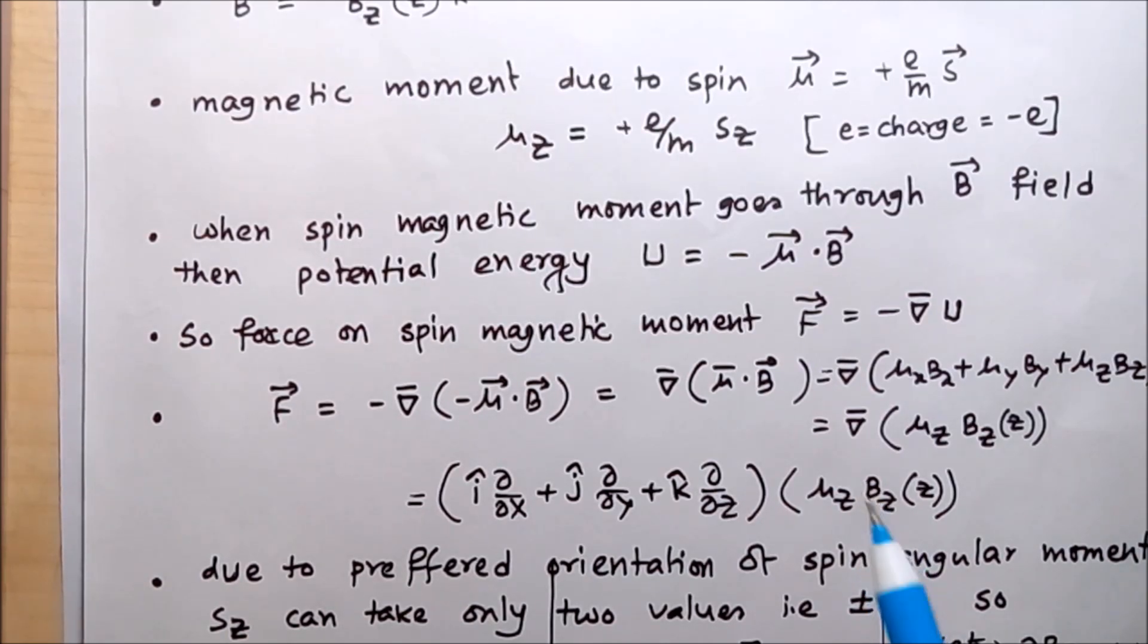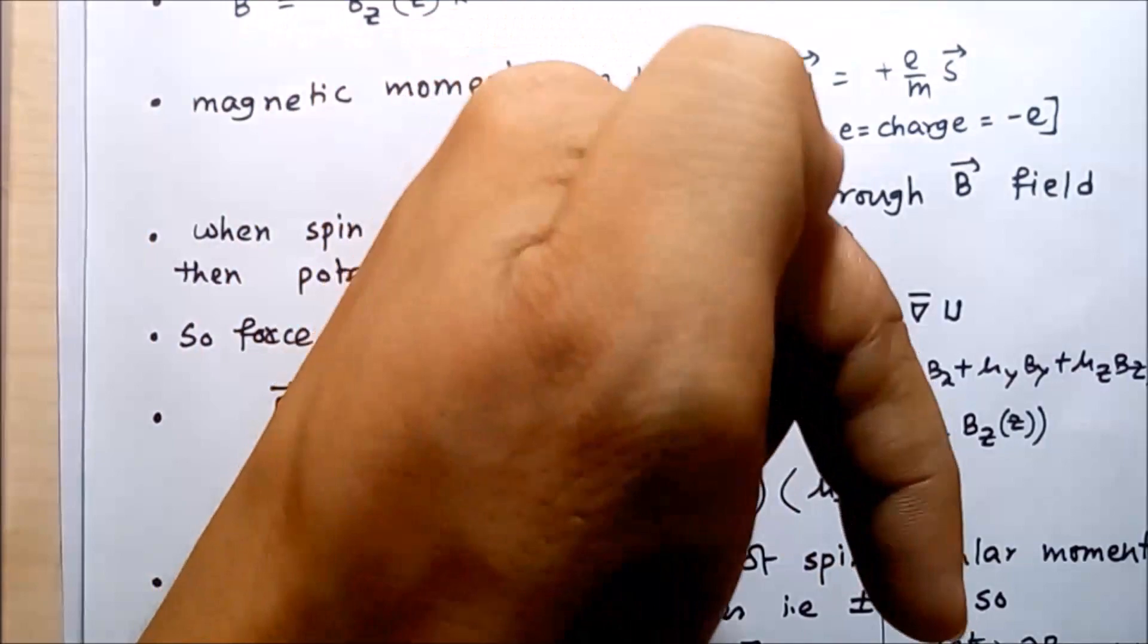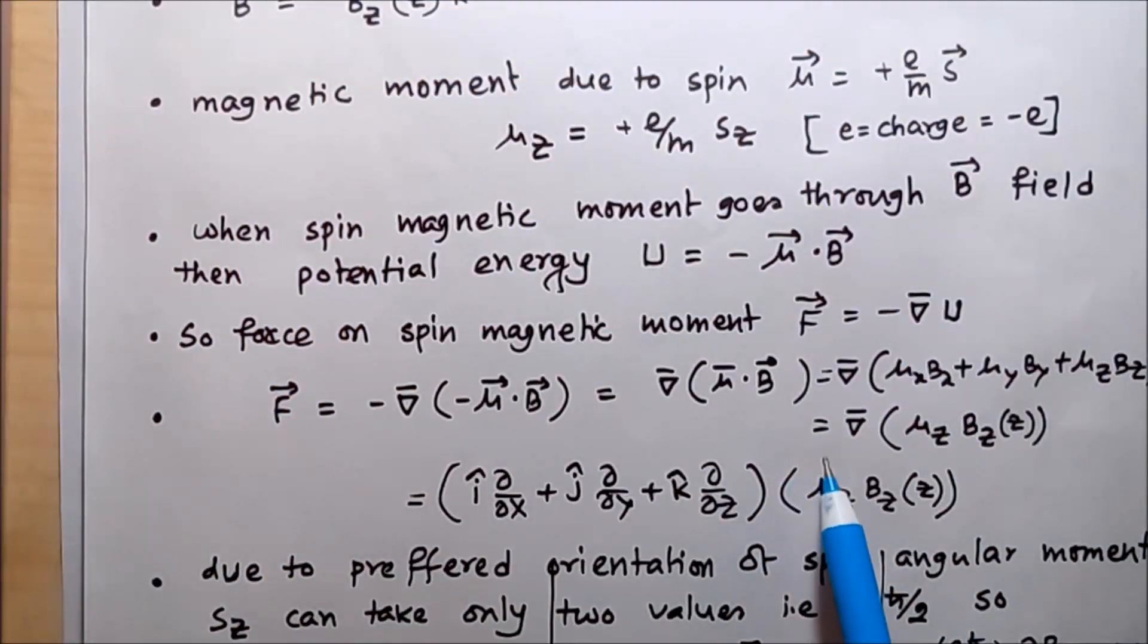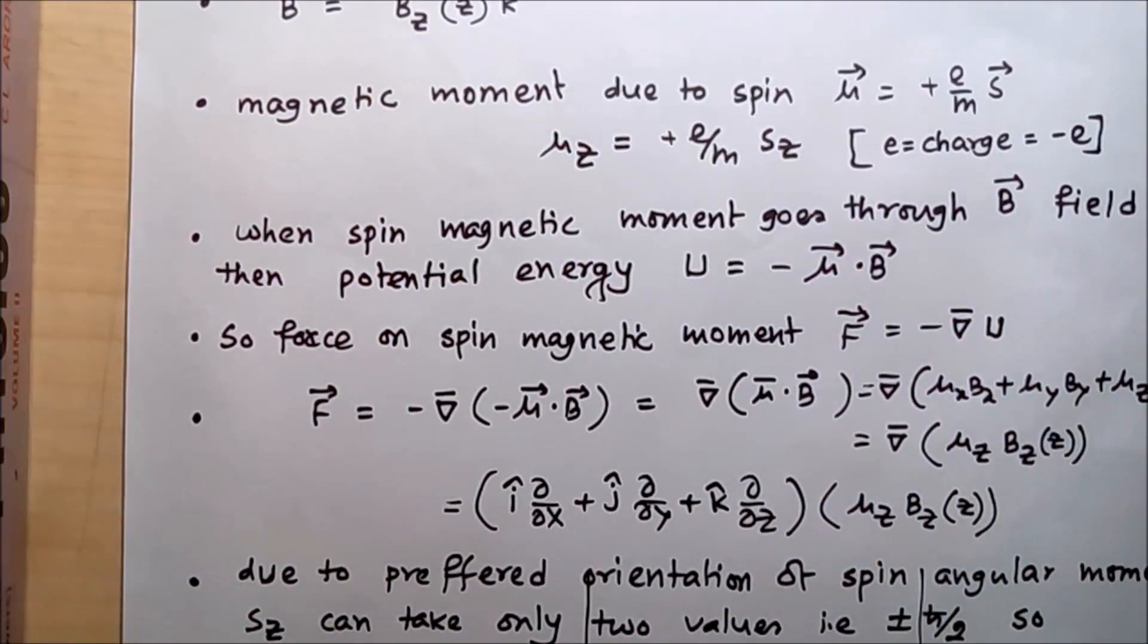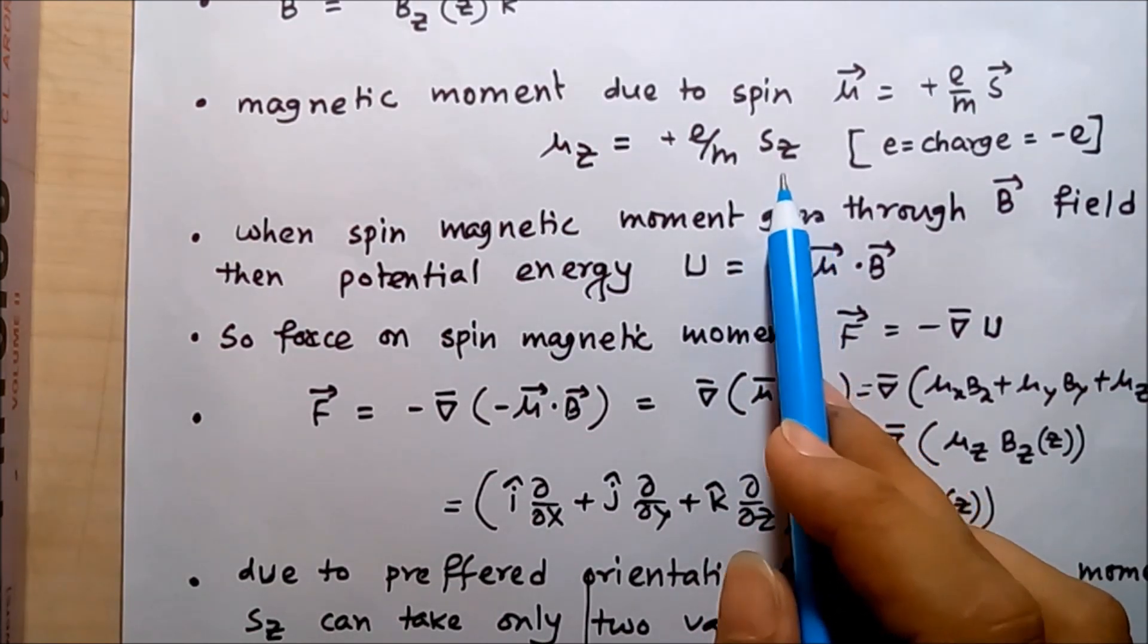Either up or down along a specific axis. So the electron can orient itself either this way or this way. The electron spin can orient itself in only two directions, and the value of the angular momentum in those two directions are h-bar by two.